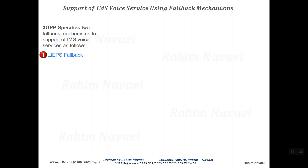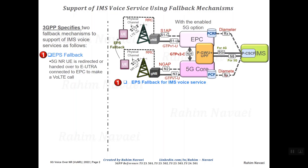The first mechanism is EPS fallback. In this case, the 5G voice over NR capable device is redirected or handed over to E-UTRAN connected to the EPC to make an IMS voice call.